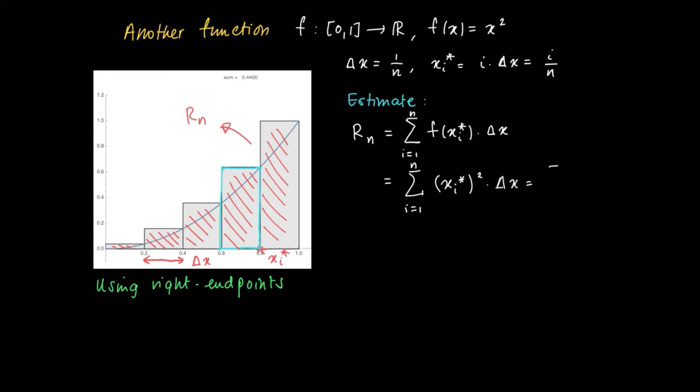This equals the sum from i equals 1 to n, where x_i star is i divided by n squared times 1 over n. So we have a constant under the sum, 1 over n to the power of 3, which we can take out.